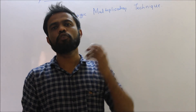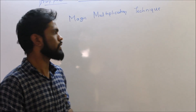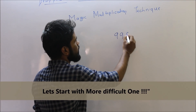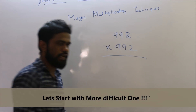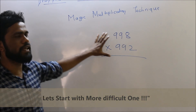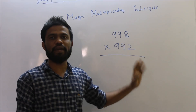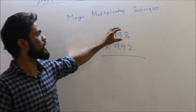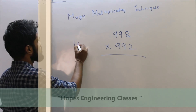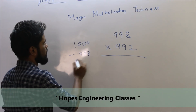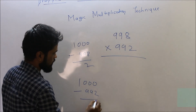Now we will solve a multiplication of three-digit numbers. Our first three-digit problem is nine hundred ninety-eight multiplied by nine hundred ninety-two. These numbers are close to one thousand, so we compare them with one thousand by subtracting. One thousand minus nine hundred ninety-eight equals two, and one thousand minus nine hundred ninety-two equals eight.